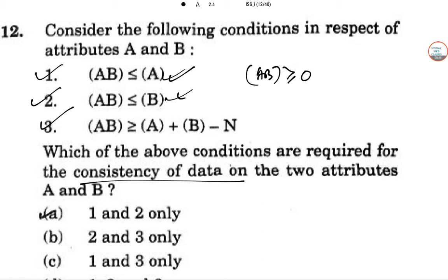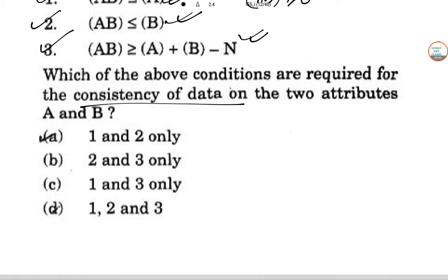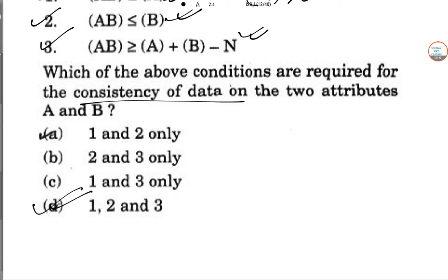If this thing is happening, A, B equal to A, so the first one is obviously correct. Second one, A, B less than B can also happen separately and A, B plus B. So all of these things are correct. So option number D is the right answer.